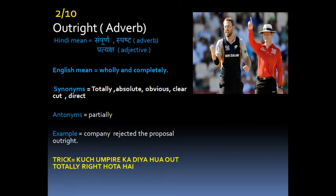The next word is 'Outright.' Outright in Hindi means 'Sampoor' — completely exposed. Outright is used in two ways: one as an adverb and one as an adjective. Its English meaning is wholly and completely, totally, direct, and obvious.